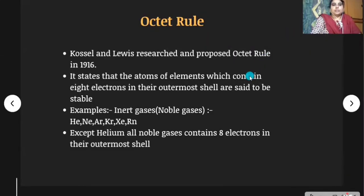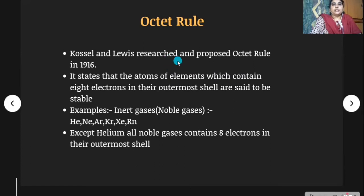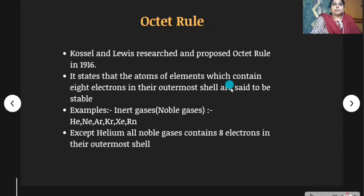Next, the octet rule. Kossel and Lewis both observed that the 18th group elements are inert in nature — they won't participate in chemical reactions. They concluded that the reason is these elements have eight electrons in their outermost shell, and proposed the octet rule in 1916. It states that atoms of elements which contain eight electrons in their outermost shell are said to be stable. These are also called noble gases.